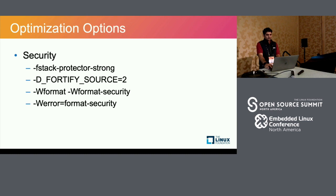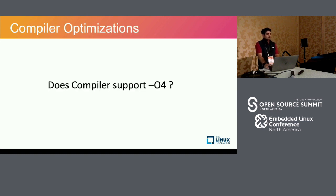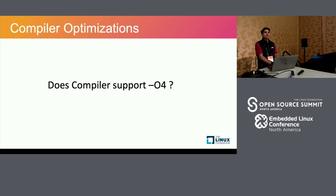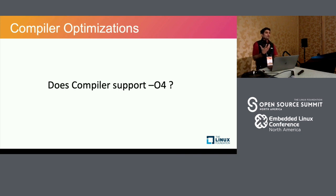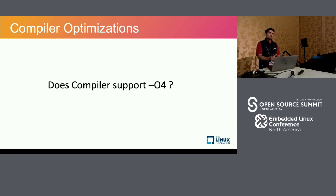Does the compiler support O4? It does, but O4 is essentially O3 — in fact you can specify O99 or O3000 and it doesn't matter. Be aware that raising this number will not infinitely force the compiler to optimize better and better. The compiler is also software and can only do certain things; it doesn't have infinite power you can extract from it.